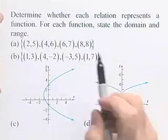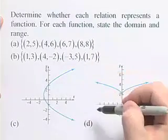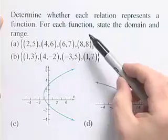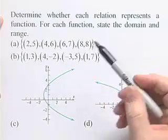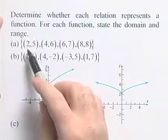For this problem, we're going to look at several relations to determine whether they're functions, and then we'll state the domain and range. We want to determine whether each of these relations represents a function. For each of the functions, we're going to state the domain and range. So we'll begin with part A.